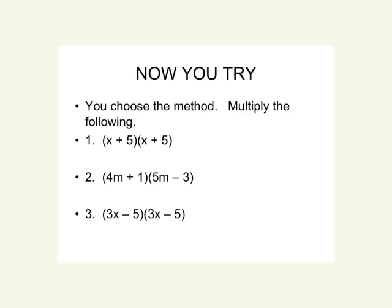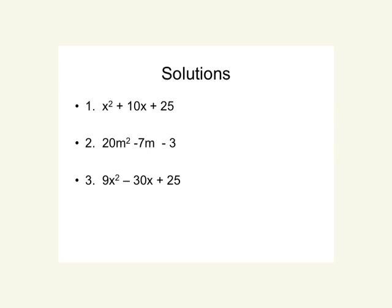Now you try — choose the method and multiply the following three binomials. Go ahead and pause the video, then hit play when you've done all three. Here are the solutions: number one should be x squared plus 10x plus 25, number two should be 20m squared minus 7m minus 3, and number three should be 9x squared minus 30x plus 25. Hopefully this video helped you understand multiplying binomials. Come ready to class tomorrow to practice this skill and we'll add a little more detail. Thanks for your time tonight.